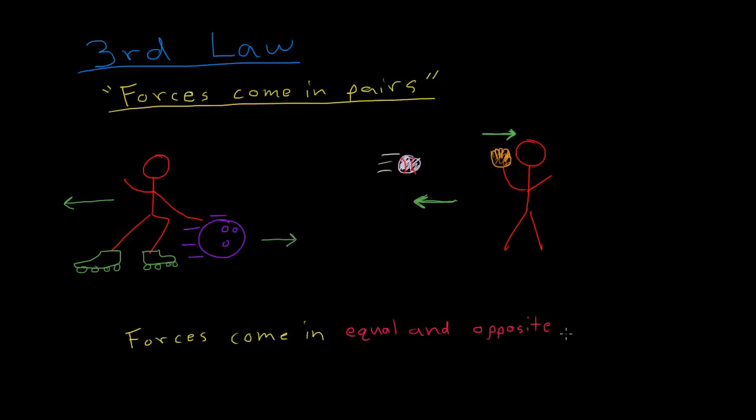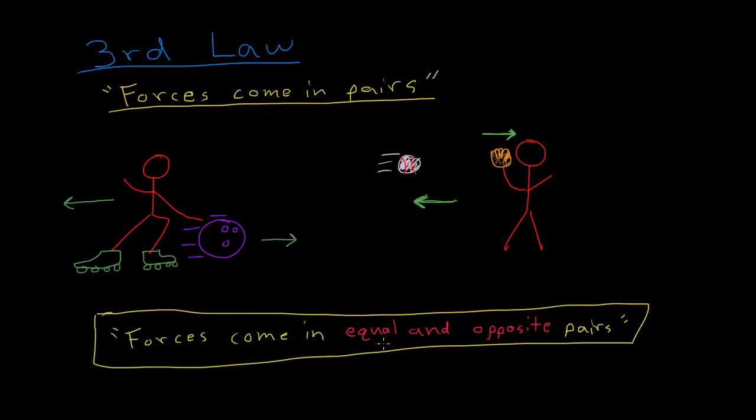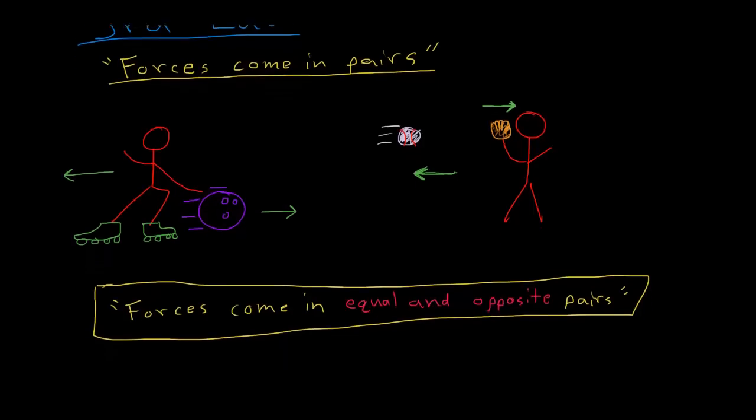And this makes sense based on our experience. In these examples, we can see that they're definitely in the opposite direction. And then you can think, well, if I had a bigger ball flying at me, I would need to put more force on it to stop it. And then I would fly back further. So it makes sense. They're at least proportional to each other. And it turns out that they're exactly equal. So now that we're convinced that forces come in equal and opposite pairs,